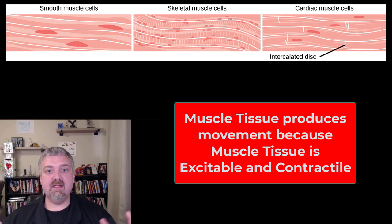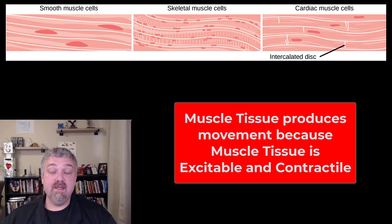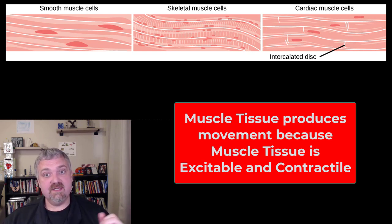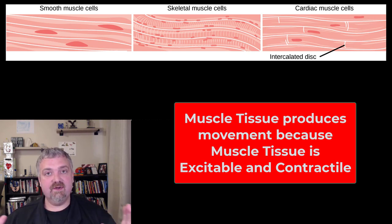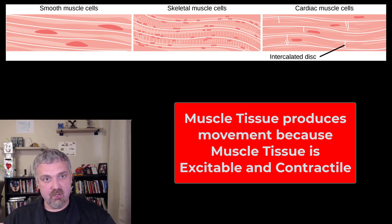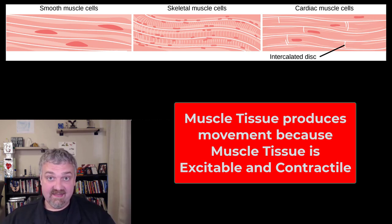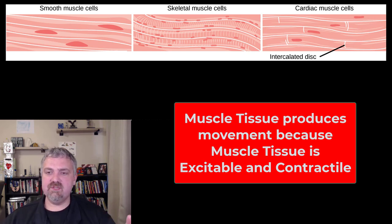Muscle has properties that allow it to produce movement. Muscle cells are all excitable, which means they respond to a stimulus — the stimulus usually being from your nervous system telling the muscles to do their job. They also contract, meaning that they shorten, and as they do so they pull, because muscle cells are connected to things, and where they're connected it's going to pull and shorten them.